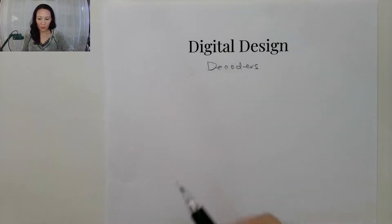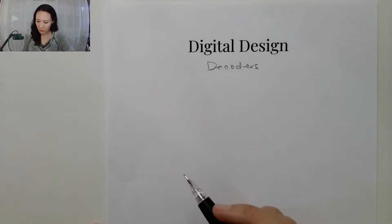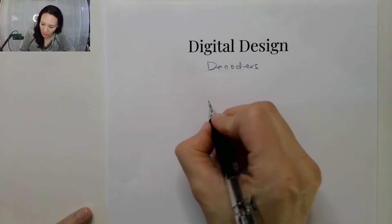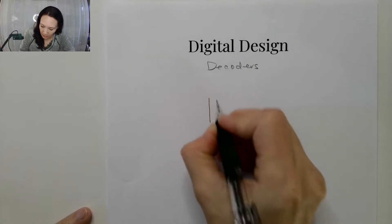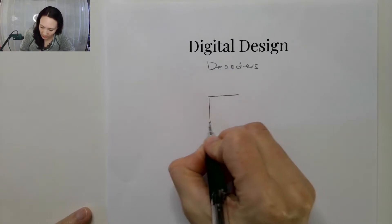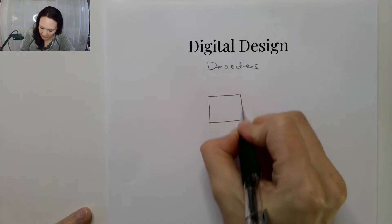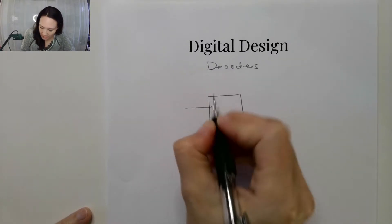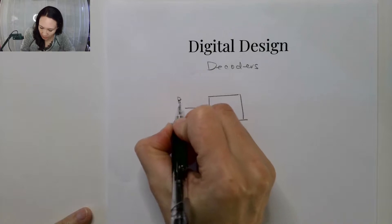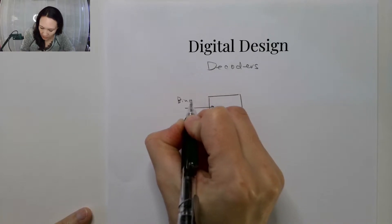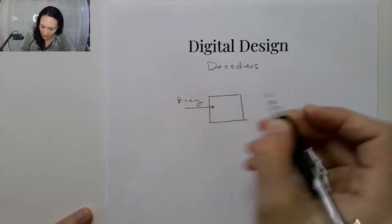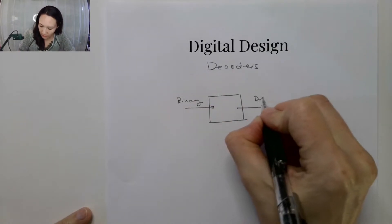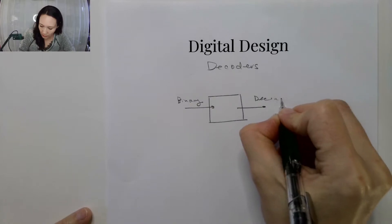Hi students, I wanted to introduce the decoder to you. A decoder is a basic integrated circuit that takes as an input a binary number and then outputs the equivalent decimal number.